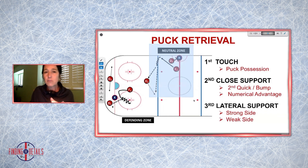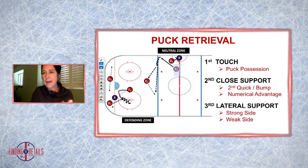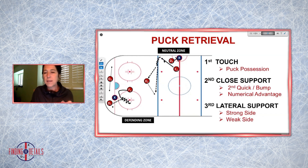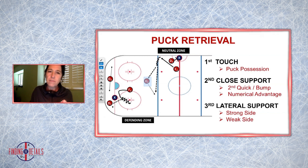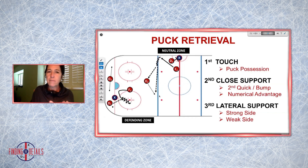The same thing is true even in the neutral zone when we're tracking back on pucks. Here we have a first touch situation where we're separating the person from the puck. We have our first forward coming back to create that second close support — a second quick to pick up puck possession. Our weak side defender will either provide strong side support, coming to the middle of the ice if under hard pressure, or if we do have strong control of the puck, use the width of the ice and provide weak side lateral support.